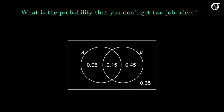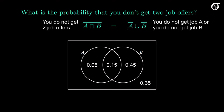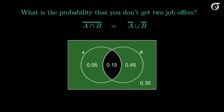What is the probability that you don't get two job offers? The left-hand side is the event that you do not get both job A and job B. The right-hand side is the event that you do not get job A or you do not get job B. Both sides correspond to this green region where you do not get two job offers — the only region left out is the intersection of A and B. Since these two regions are the same, the probability is 1 − 0.15, or 0.85.